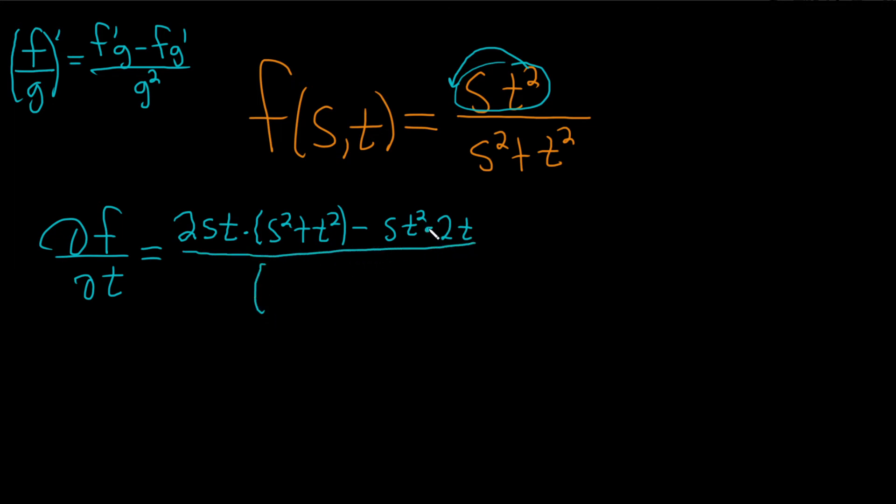And all of this is being divided by the bottom piece squared. So parentheses. S squared plus t squared, and then it's squared. Okay, this is equal to...